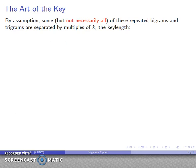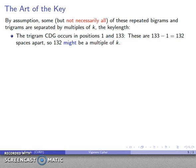Here's where we have to apply the art of the cryptographer. Some of these, but not necessarily all of these repeated bigrams and trigrams, are separated by multiples of the key length. For example, the trigram CDG occurs in positions 1 and 133. These are 132 spaces apart. So 132 might be a multiple of our key length. The caution here is it's possible that the two occurrences of CDG are from entirely different sets of three letters, and the fact that they are encrypted the same way is mere coincidence.